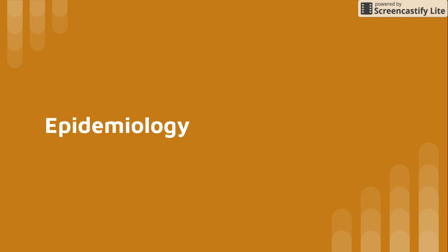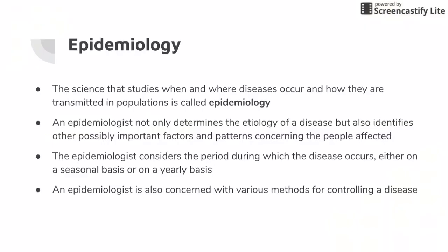Epidemiology is the science that studies when and where a disease occurs and how diseases are transmitted to populations. An epidemiologist looks at all these different factors. In today's crowded and overpopulated world, where frequent travel and mass distribution of food and goods are a way of life, diseases can spread rapidly. A contaminated food or water supply, for example, can affect many thousands of people very quickly. Being able to identify the causative agent of the disease is desirable so that we can effectively control and treat it.